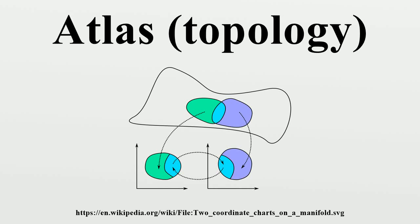In mathematics, particularly topology, one describes a manifold using an atlas. An atlas consists of individual charts that, roughly speaking, describe individual regions of the manifold.